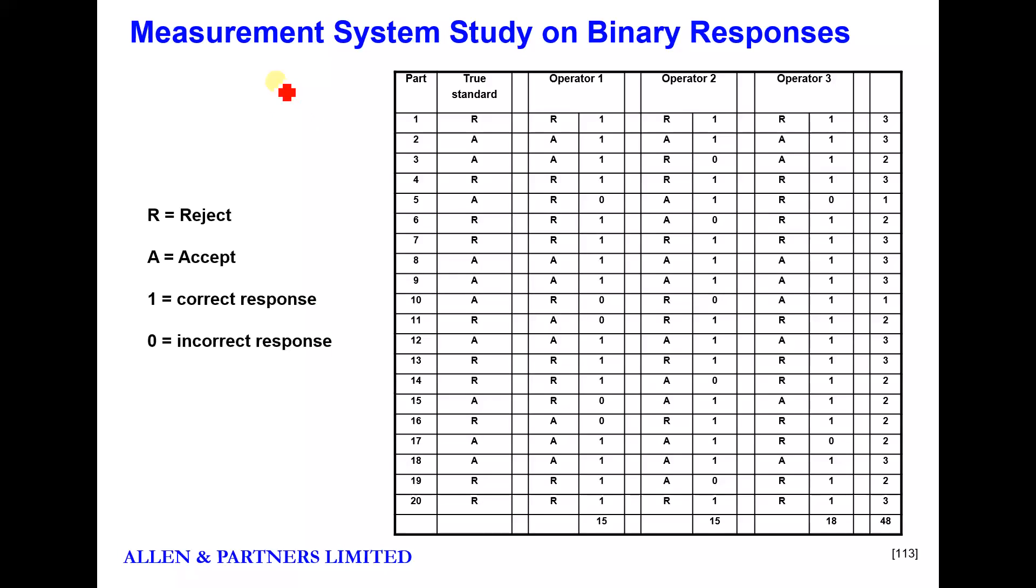Now, unlike measurable data where we would normally take a sample which is random, when it's pass-fail we're going to do the opposite. We are going to deliberately select the pieces to be used during the MSA. The selection should have 50% of them rejectable and 50% acceptable, regardless of the defect rate in the process. It has to be a 50-50 split.